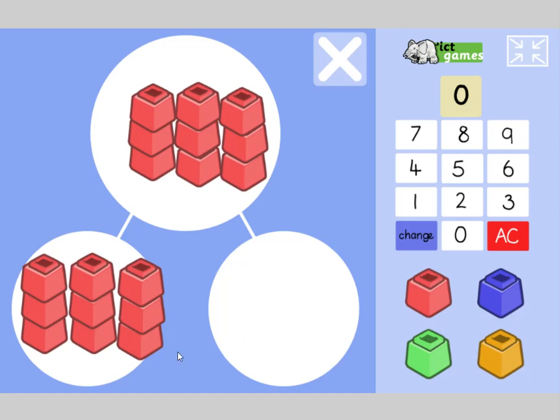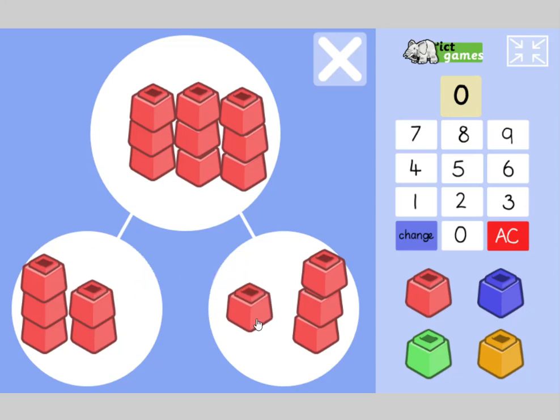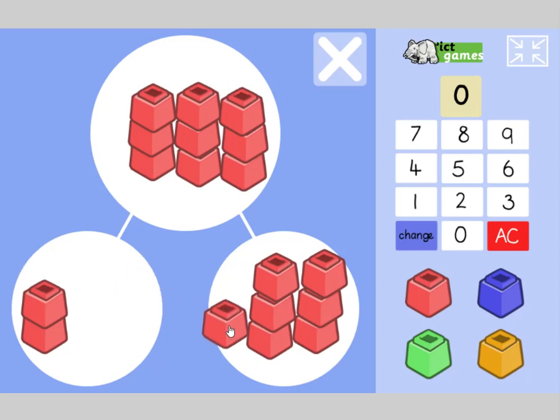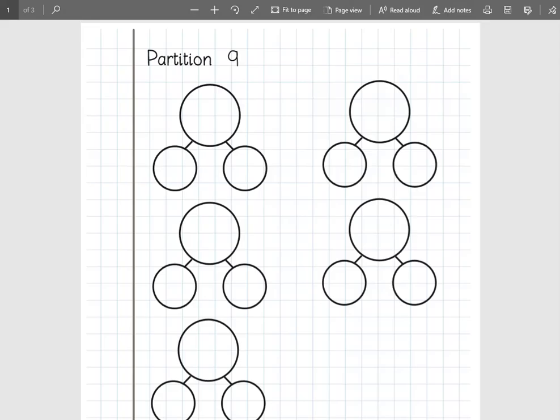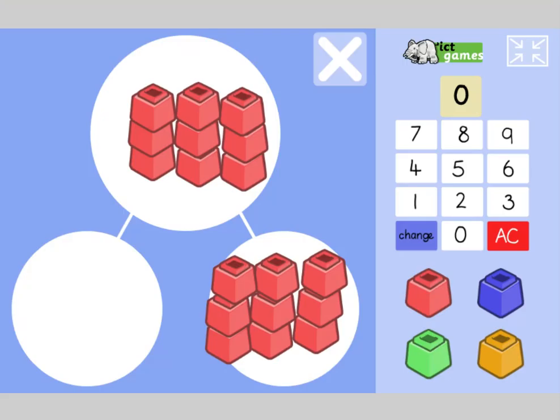Let's have a look at what we've come up with. We've got nine and zero make nine. We've got eight and one, seven and two, six and three, five and four, and then they repeat. So now we've got four and five, three and six, two and seven, one and eight, and zero and nine. Hopefully you've got those recorded because we'll need those in a minute.